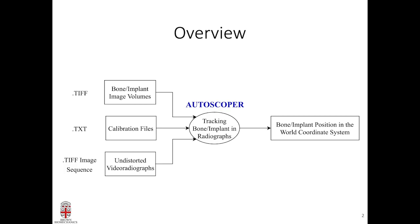Autoscoper takes three types of input. One is the bone or implant image volume — this is a partial CT image. Another input is the calibration files, which define the 3D world view for Autoscoper; they are basically the camera model or x-ray source models. We also need the undistorted video radiographs, since we are doing tracking over them.